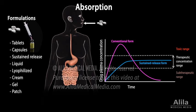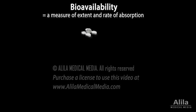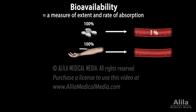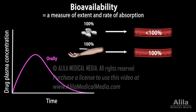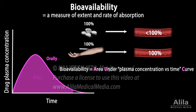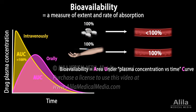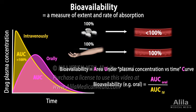A measure of the extent and rate of absorption is bioavailability. Bioavailability is usually referred to as the fraction of the administered drug that is absorbed into the bloodstream and is therefore available to the target tissue. A drug given intravenously immediately enters the systemic circulation and therefore has a bioavailability of 100%. An orally administered drug, on the other hand, must pass through the intestinal wall and is subject to elimination by the liver before it can reach the systemic circulation, so its bioavailability is significantly lower. Bioavailability is usually calculated as the area under the plasma concentration versus time curve, or AUC. Because bioavailability of a drug is considered 100% when delivered intravenously, bioavailability of a drug given other ways can be calculated by dividing its AUC by the AUC of the same drug given intravenously.